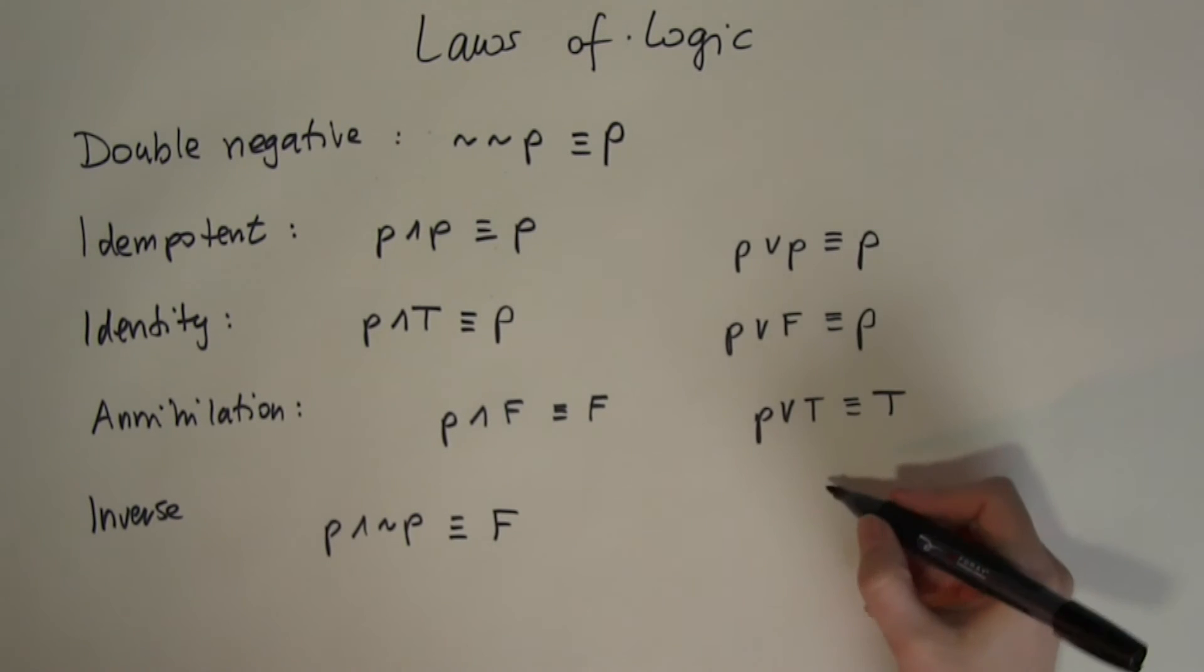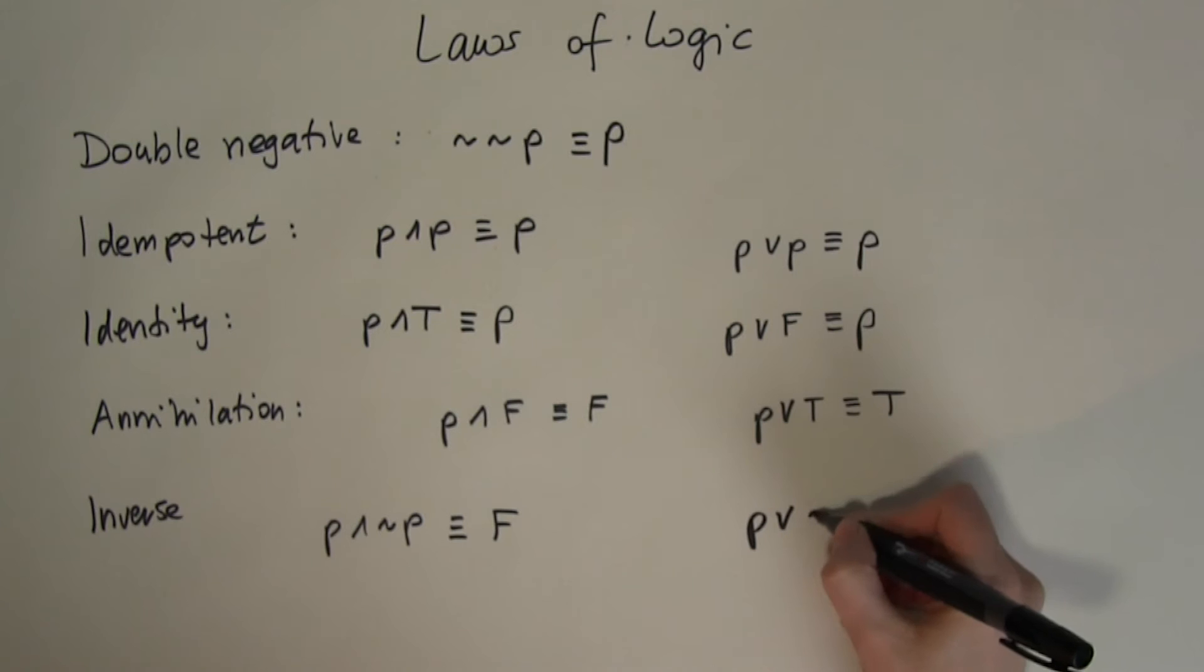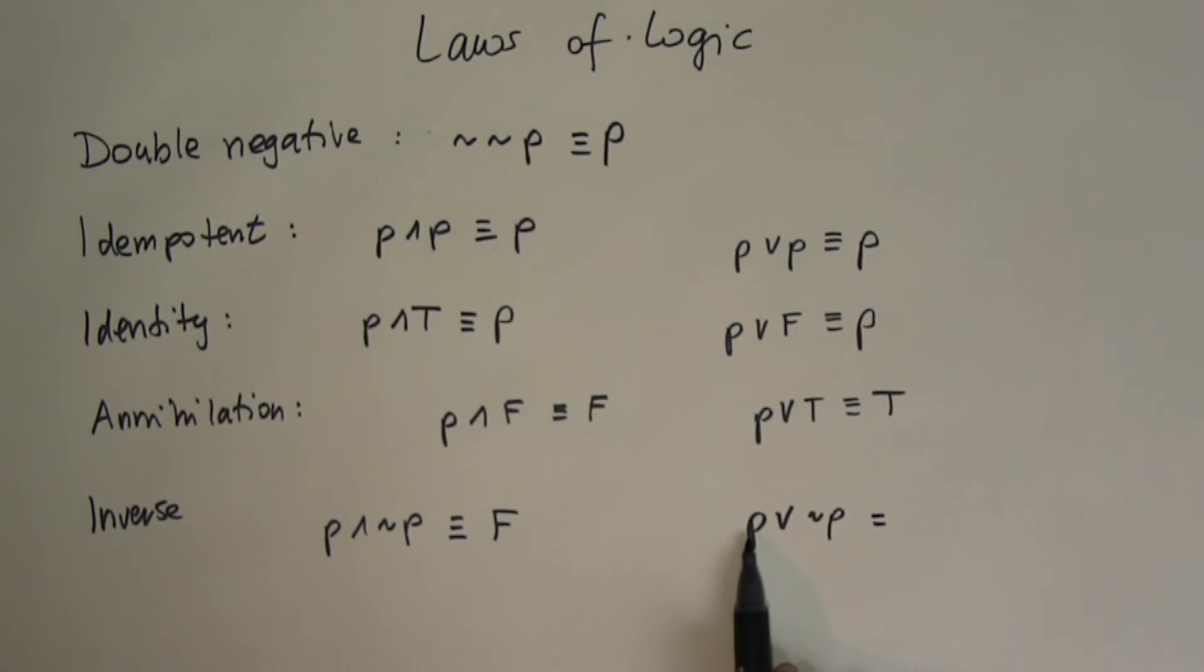And what happens if I have P or not P? If P is true then not P is false, but remember one of them is true so I'm going to end up with a true sign. If P is false then not P is true. So again I have a true sign so I will be able to get through with the water. So this is always going to be true.